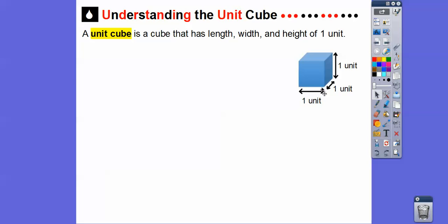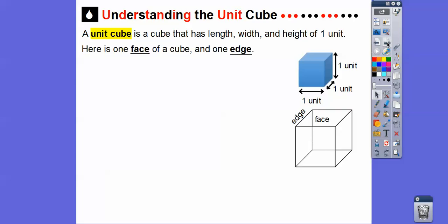So each side is one — one, one, and one. These units could be in centimeters, feet, meters, inches — you'll see those in the next lesson. Here's one face of a cube, which is a square on top. There's also a square in the front, on each side, on the bottom, and in the back. And here's an edge — it's where two faces meet, that little line segment.